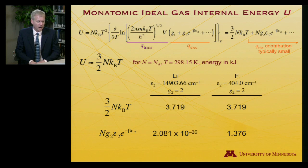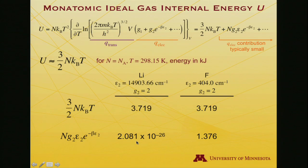On the other hand, for the fluorine atom, the contribution is actually 1.376—about a third as much as the translational component. So you do see that as the states get relatively close to the ground state, now they can contribute something. But this helps to put some numbers on just how unimportant it is in most systems.